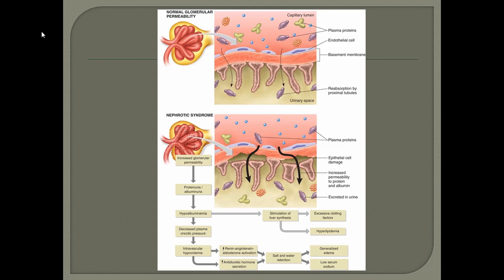The other consequence in nephrotic syndrome is that the liver, attempting to restore low albumin levels, begins to synthesize everything at once. It produces excessive clotting factors, putting patients at higher risk for renal thromboembolism, pulmonary embolism, DVT, and stroke. It also causes hyperlipidemia, and because lipids cannot easily be cleared, this leads to accelerated atherosclerosis.